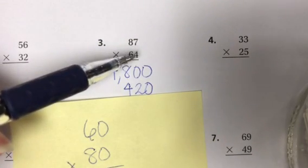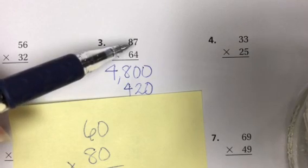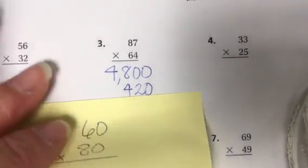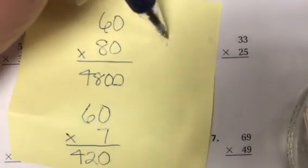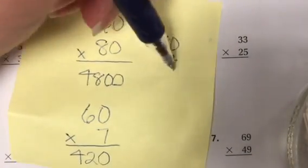Now I'm going to look at this 4. This 4 is in the ones place so it's just a 4 but I'm going to multiply it by this 8 which is in the tens place. So what I'm really saying is 80 times 4.